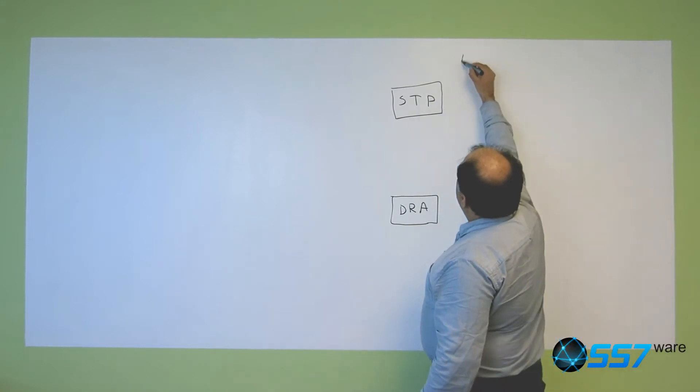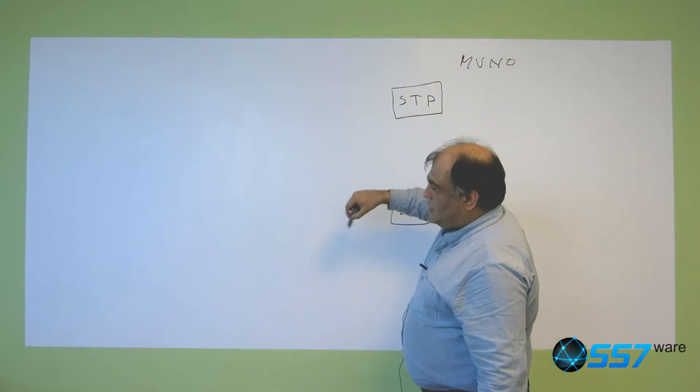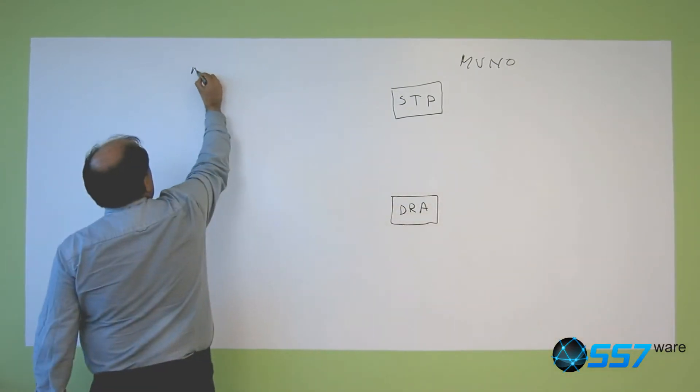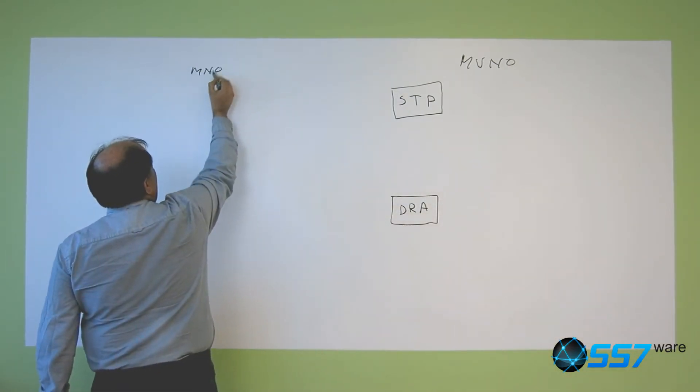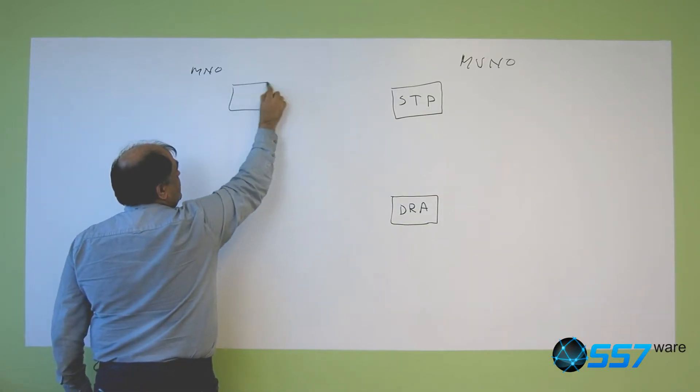So the MVNO here has a set of them and the MNO or roaming hub or whatever which interconnects has another set.